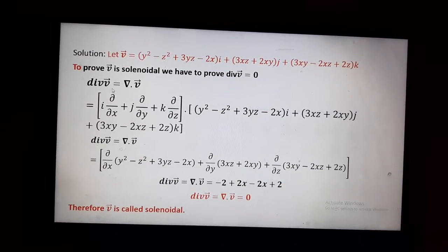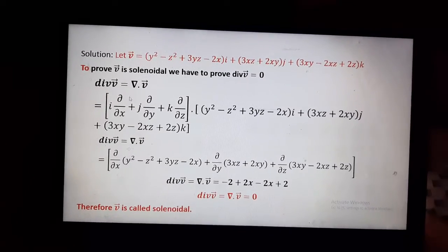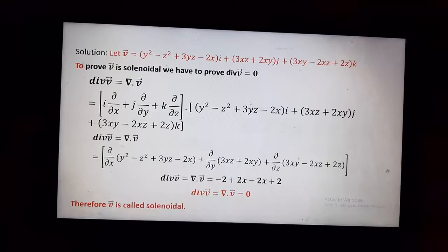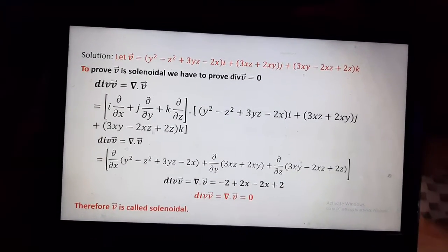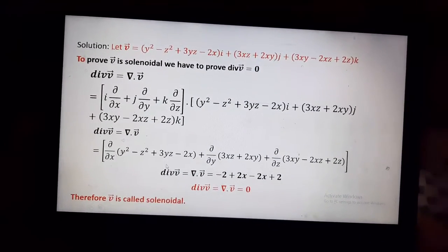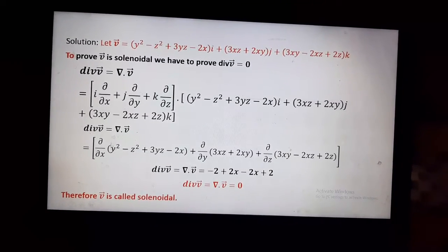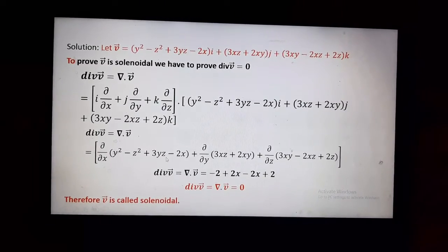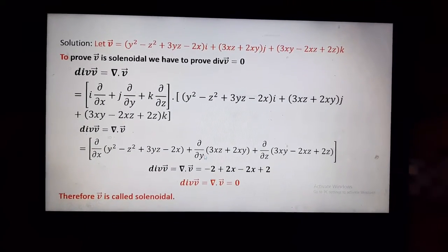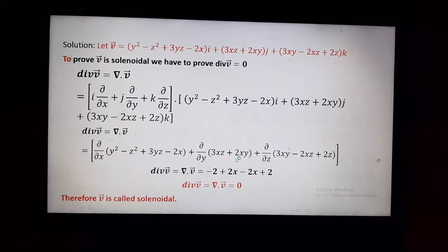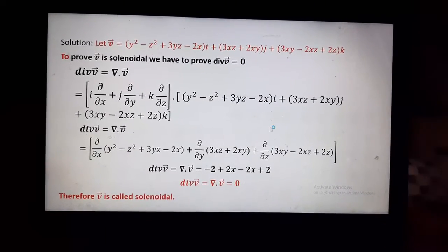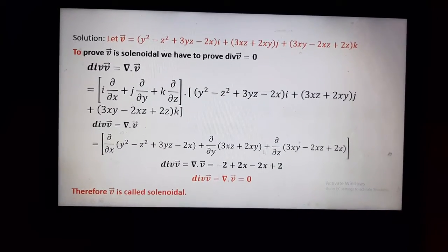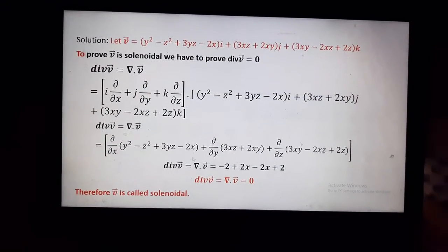So divergence of V equals del dot V. By using the dot product, we will get ∂/∂x of (y² − z² + 3yz − 2x) plus ∂/∂y of (3xz + 2xy) plus ∂/∂z of (3xy − 2xz + 2z).